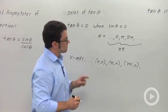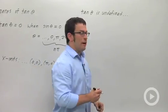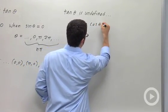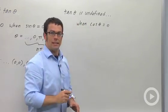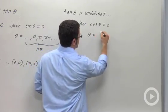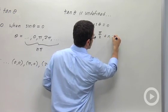What about the asymptotes? Well tangent theta is undefined when cosine theta equals zero. Remember that identity. Cosine theta equals zero when theta equals pi over 2 plus n pi. Again, where n is any integer.